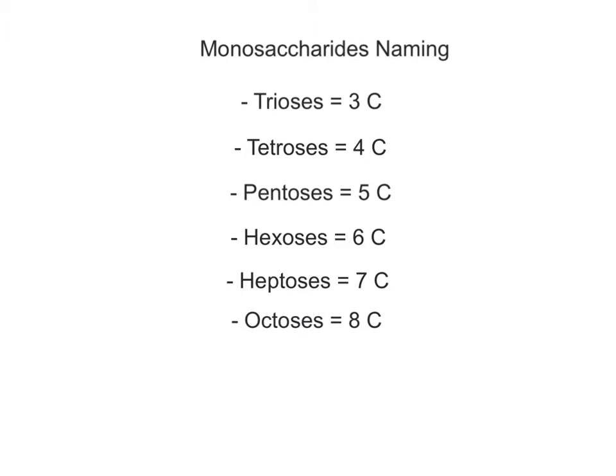Trioses are the smallest monosaccharides with three carbons — the prefix 'trio' means three. Tetroses have four carbons, pentoses have five carbons, hexoses have six carbons, heptoses have seven carbons, and octoses, the largest monosaccharides, have eight carbons. A common molecular formula for hexose monosaccharides is C6H12O6, with six water molecules distributed within their chemical structures — one water molecule for each of the six carbon atoms.